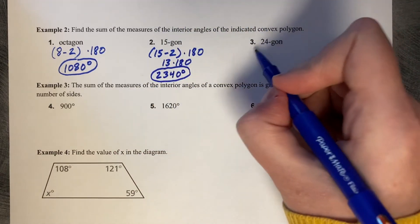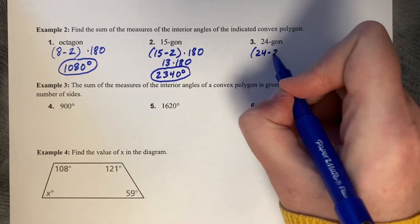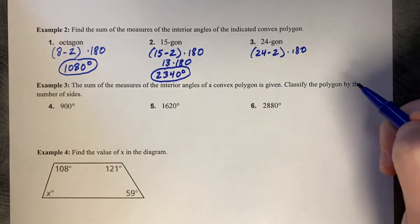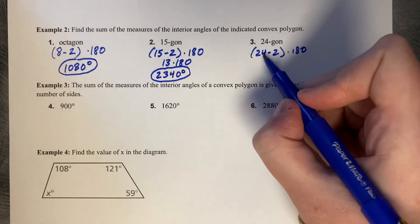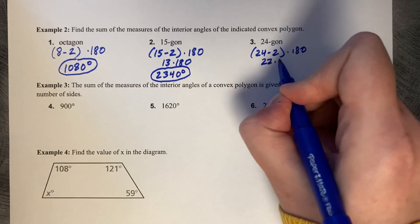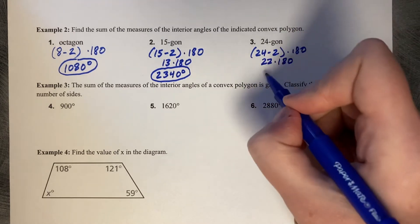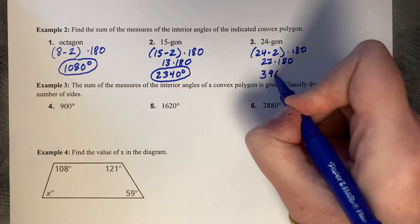How about a twenty-four gon? Twenty-four minus two times 180. Twenty-two times 180, which is 3,960 degrees.